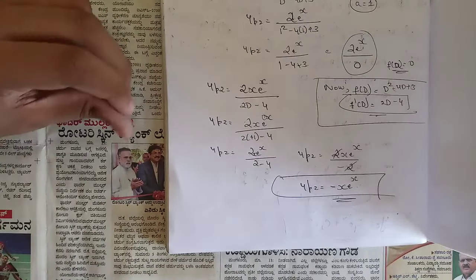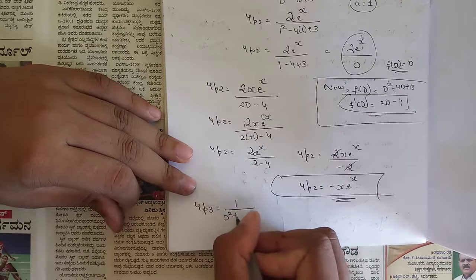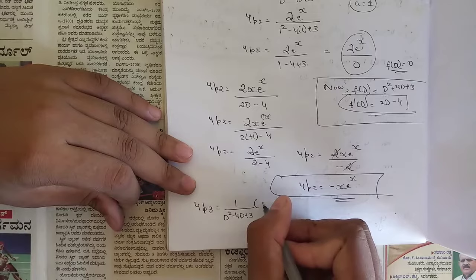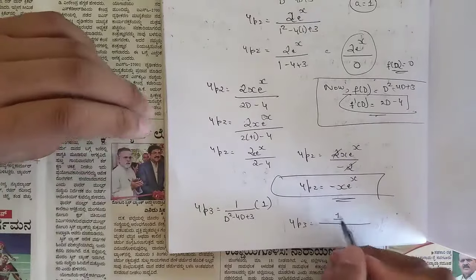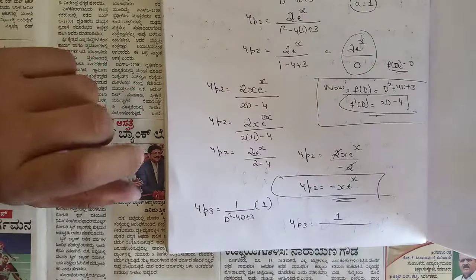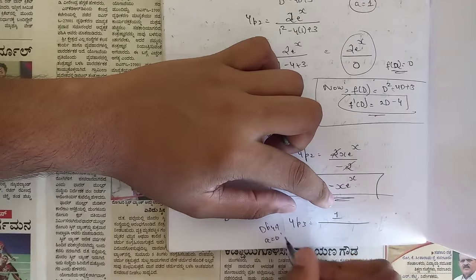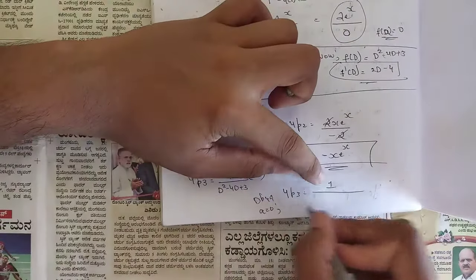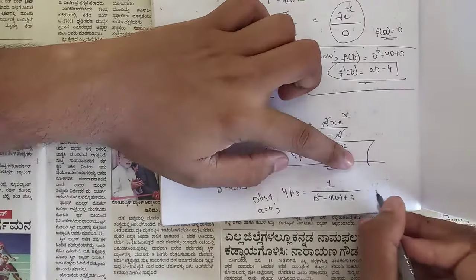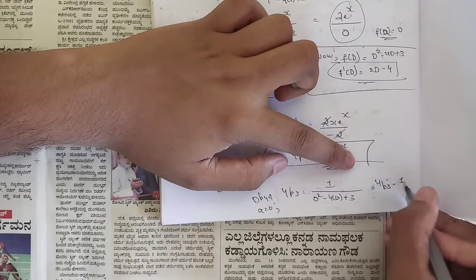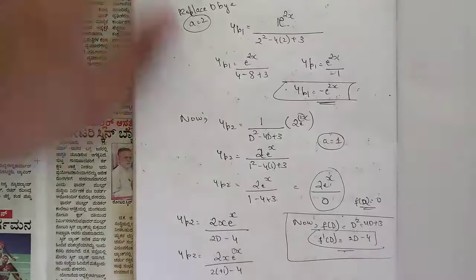For yp3, r(x) = 1 (constant), so a = 0. yp3 = 1 / (0² - 4·0 + 3) = 1/3. We have now found all three parts: yp1 = -e^(2x), yp2 = -x·e^x, yp3 = 1/3.